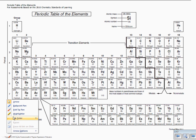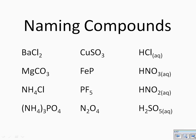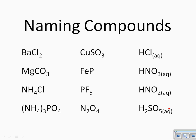Hydrogen is our first element. It is group one, but notice it is separate from the rest of group one. That is because it is considered a nonmetal. And in this particular compound, it is bonded to SO5, which looks a lot like some of the polyatomics we've discussed in past videos.